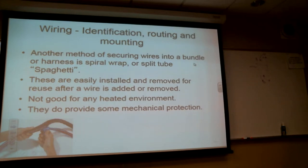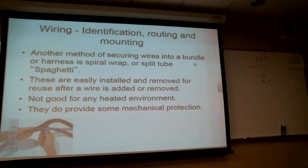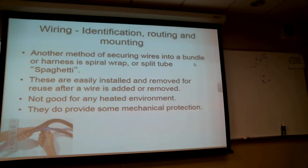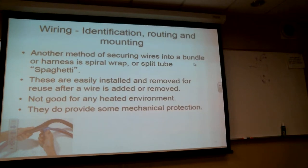The problem with spaghetti tubing is finding aircraft-grade material. It's almost always going to be PVC, which begins to melt at about 250 degrees — just not acceptable. It has a tendency to burn since it's a petroleum product, and produces toxic gases. So it doesn't belong on an airplane.